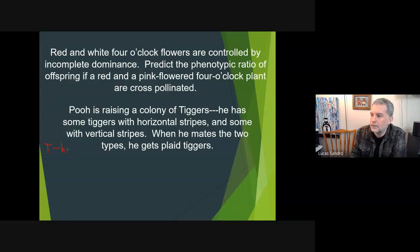Before we get into the actual questions, let's pick a letter and just say that T is horizontal and T with the mark is vertical. The setup tells you that when he mates a vertical and a horizontal tigger you get plaid. Well, that looks like a P to F1 - that's just two T's, two T's with the mark, and all the offspring are heterozygous like that.